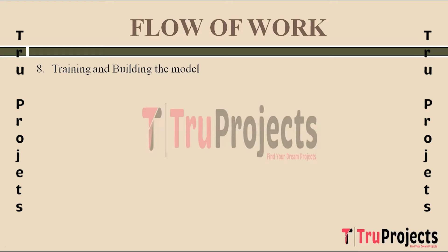We develop and evaluate various machine learning models. The first model built is LGBM (Light Gradient Boosting Machine), a gradient boosting framework efficient with large datasets, known for its speed and accuracy. It builds an ensemble of decision trees optimizing the boosting process. The next model is XGBoost (Extreme Gradient Boosting), another gradient boosting algorithm known for robustness and performance, effective in handling imbalanced datasets which is crucial for fraud detection. CatBoost (Categorical Boosting) is also used — a gradient boosting library specifically designed to handle categorical features effectively.